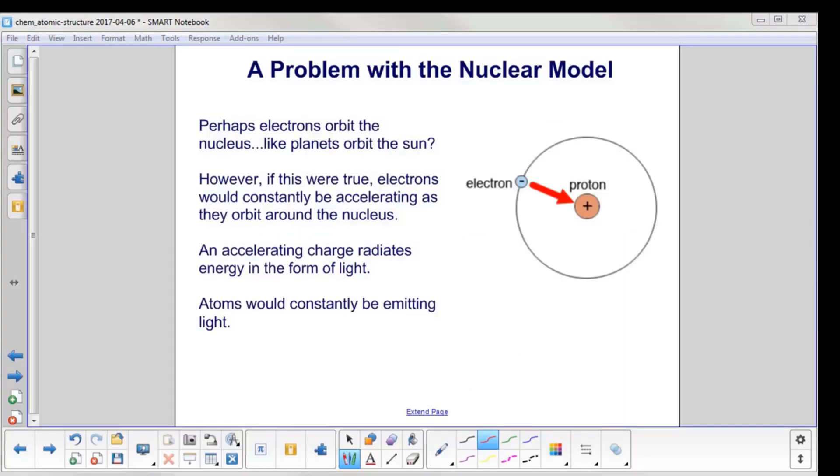Perhaps the electrons orbit the nucleus, like planets orbit the sun. That kind of makes sense because Newton had figured out planetary orbits and Kepler and all those other fellows, so why can't electrons behave the same?